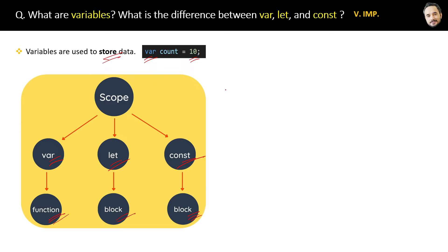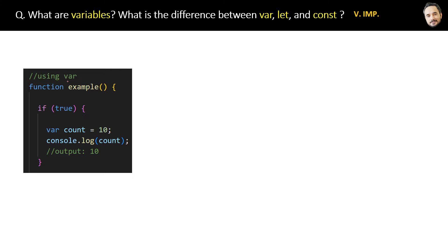Here is the code example for the var keyword. Here we have one function called example and inside that we have an if condition that is always true. Inside it we are using the var keyword to assign the count a number value of 10. When we print the count inside the if block, the output will be 10, which is expected.